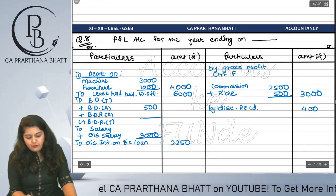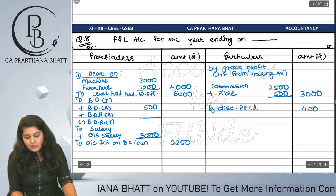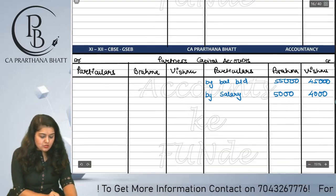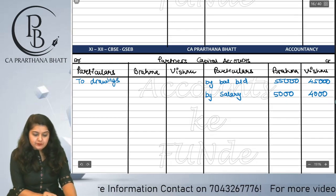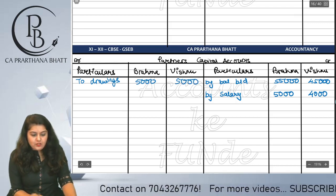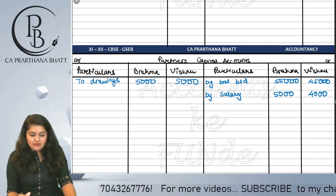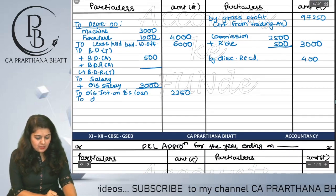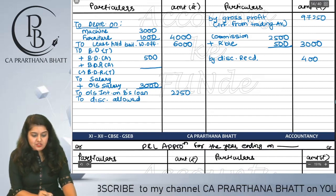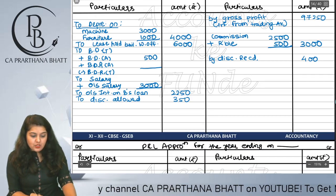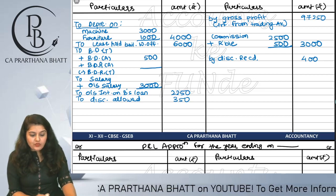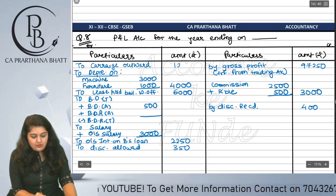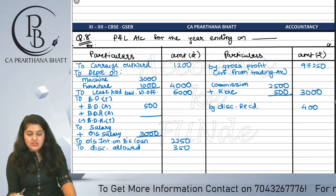Now posting the debit balances. Drawings for Brahma and Vishnu, 5,000 each, go to the capital accounts. Leasehold building and machinery are already done. Discount allowed 350 goes to P&L debit. Debtors of 40,000 are already adjusted to 39,500. Carriage outward 1,200 goes to P&L debit side.